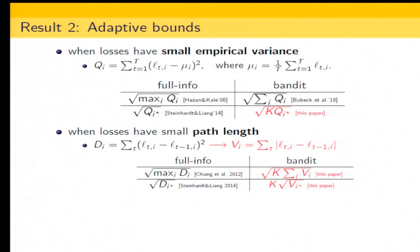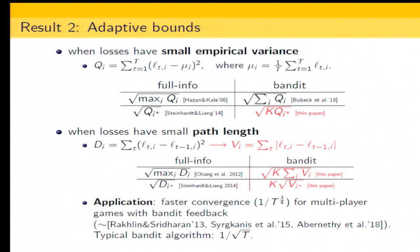We achieve bounds that are either a sum over path lengths of all arms or depend on the path length of the best arm. There are recent works saying that in multiplayer games, if all users are using an algorithm with a path length boundary guarantee, their convergence rate to the equilibrium can be faster. Our application is in a similar sense to these previous works, but our algorithm can work in a bandit setting.